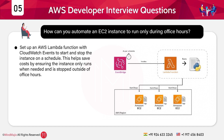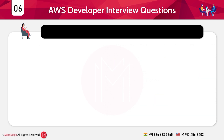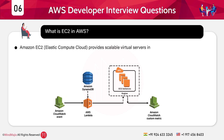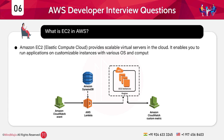Now let's proceed with the next category in the beginner level: the most frequently asked general interview questions. Question 6: What is EC2 in AWS? Answer: Amazon EC2, or Elastic Compute Cloud, provides scalable virtual servers in the cloud. It enables you to run applications on customizable instances with various operating systems and compute configurations. EC2 integrates with other AWS services like EBS and VPC.